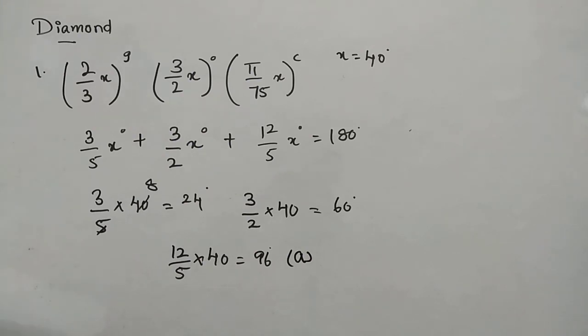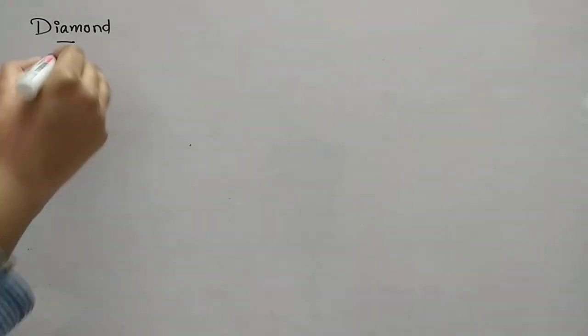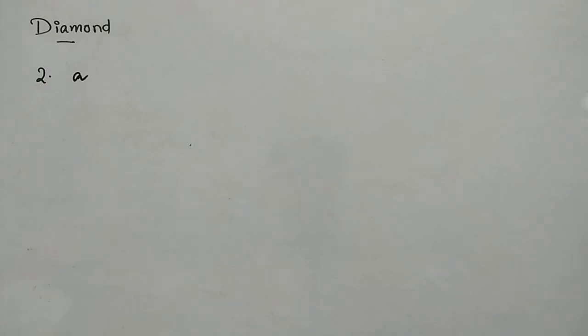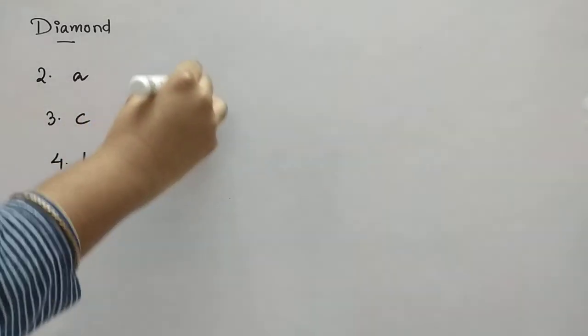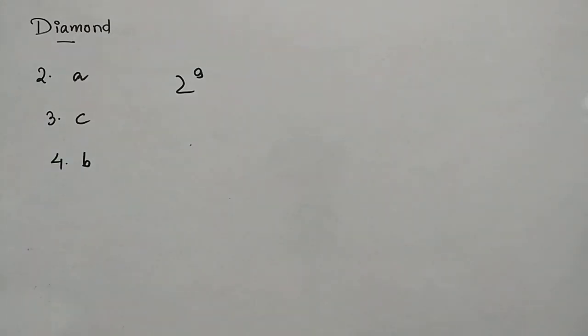Now we will see second question, a matrix match. The measure of 120 minutes in sexagesimal system is option A, 2 degrees. Then angle subtended by an arc of length 2r at center is option C, 2 radians. The measure of 200 minutes in centesimal system is option B, 2 grades. The measure of 120 seconds in centesimal is option D, 2 minutes.